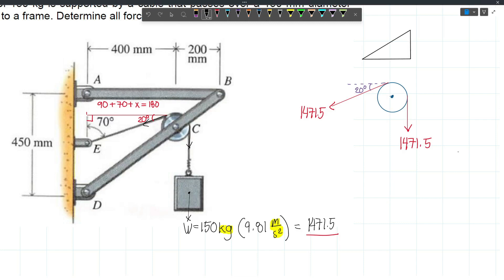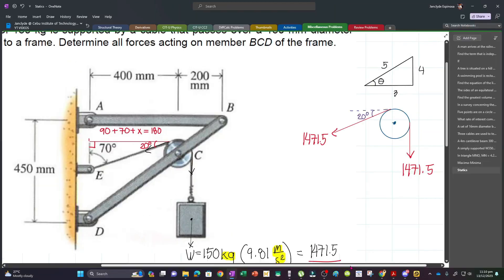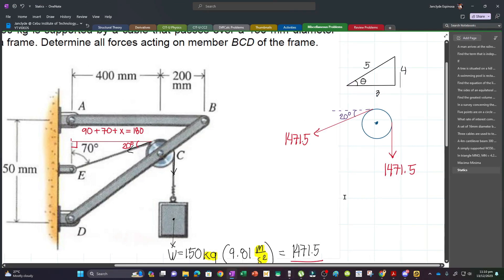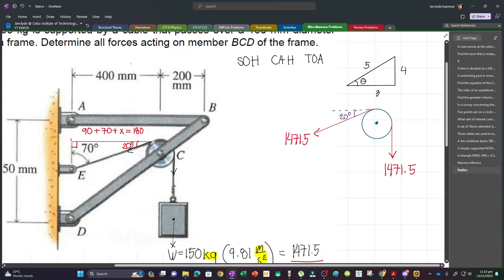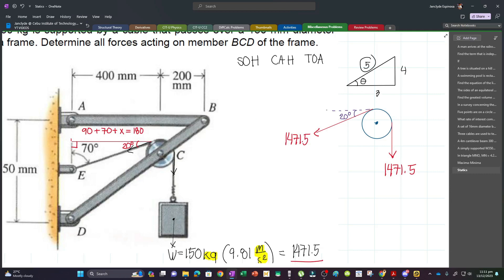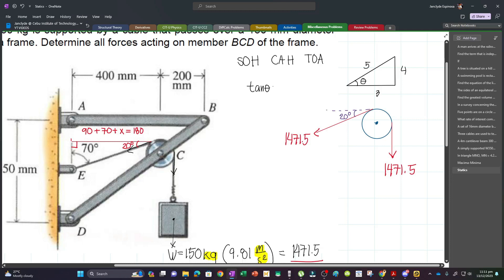We can extend a horizontal line here. This is 20 degrees. But if you get the component of forces, which angle will you use? The important concept is: if the angle is here, and you form a triangle, what is the relationship?